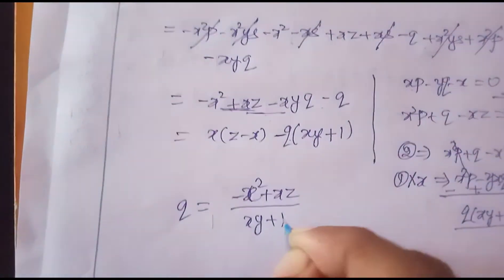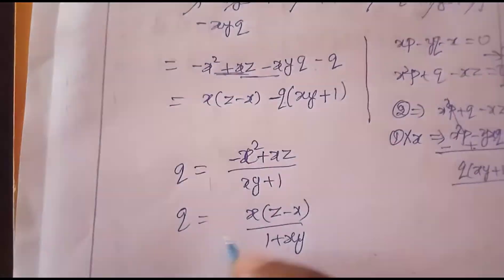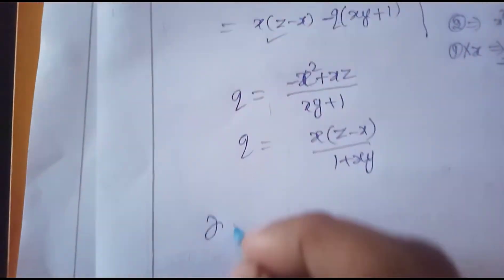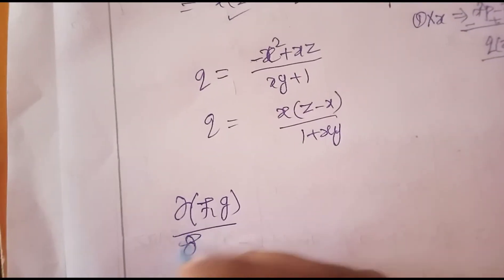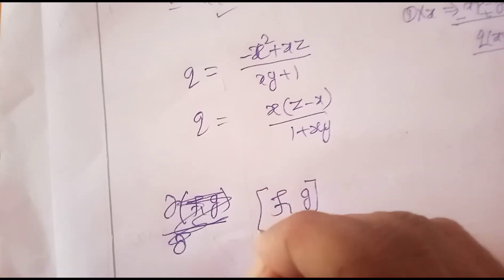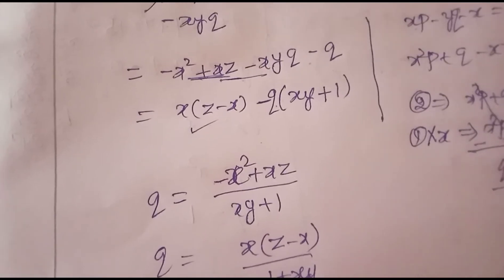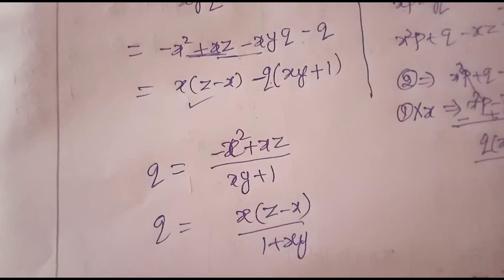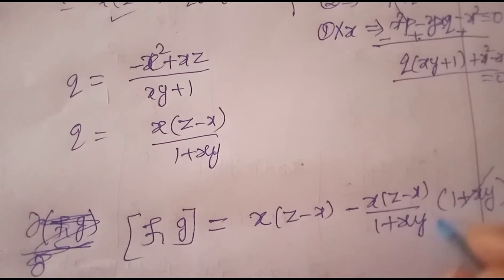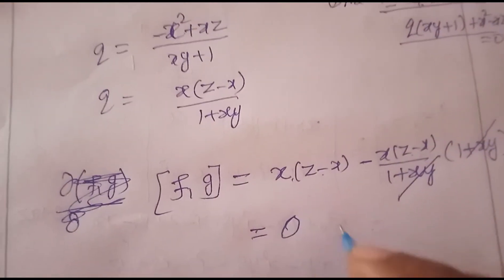From this: q = x(z − x)/(1 + xy). Substituting q back into the Jacobian expression, we get: (−x² + xz) + (−xy − 1)·x(z−x)/(1+xy) = x(z−x)·[1 − x(1+xy)/(1+xy)] which simplifies. The sum of all four Jacobian terms equals zero: ∂(f,g)/∂(x,p) + corresponding terms = 0, confirming the compatibility condition is satisfied.